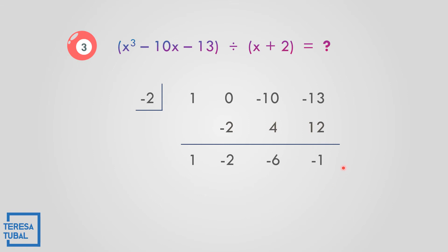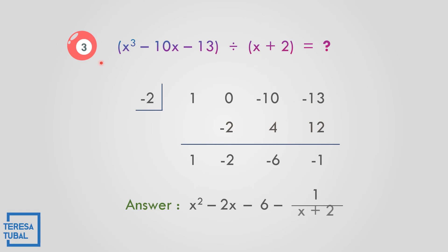Since the remainder is negative 1, the quotient is formed as follows: x cubed divided by x is x squared, so 1x squared minus 2x minus 6, with remainder negative 1 all over the divisor x plus 2. The final answer is x squared minus 2x minus 6 minus 1 over x plus 2.